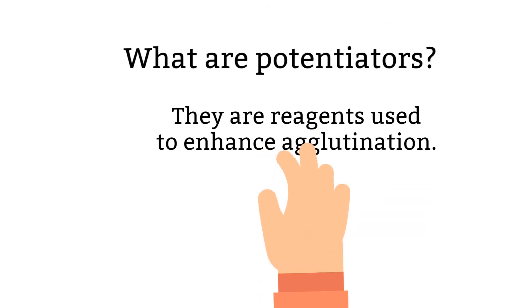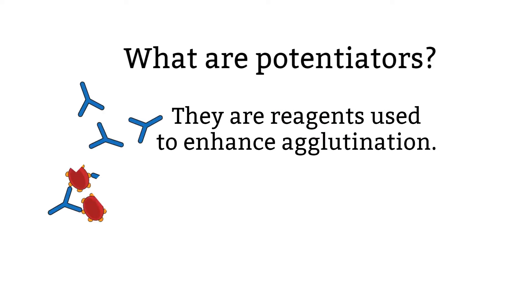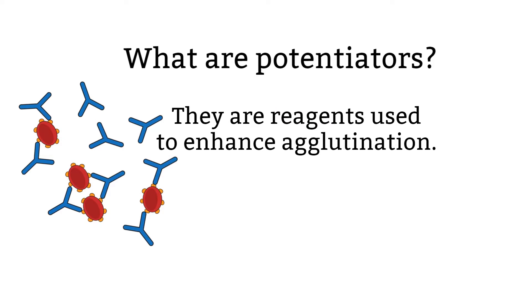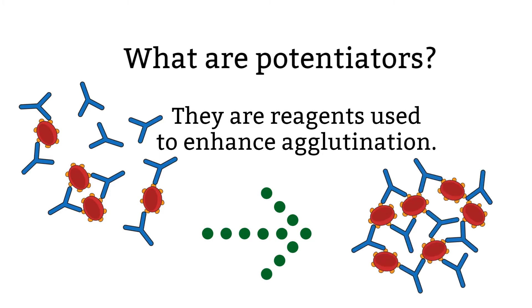A potentiator is a reagent compound used to enhance reaction. In blood bank, we use potentiators to enhance our reactions to promote agglutination. Basically, we use it to make weak reactions stronger. Sometimes the agglutination is not as clear as we like, so we add the potentiator to see if we can differentiate it a little bit more.